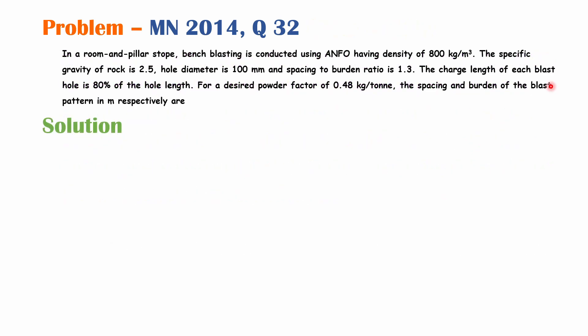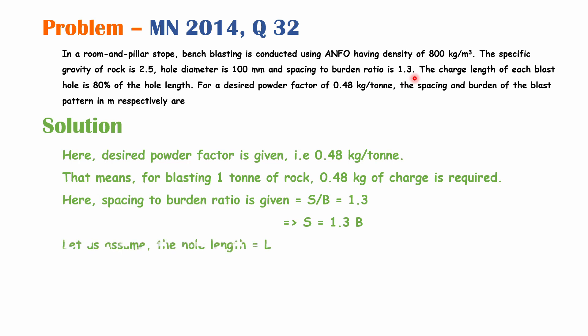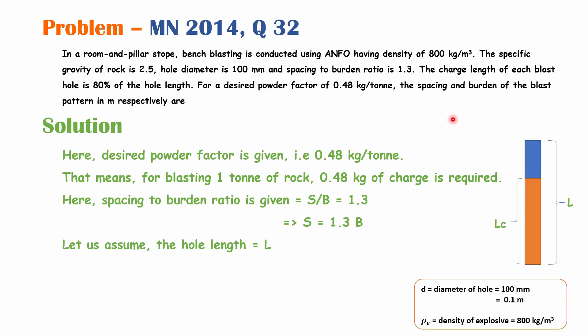The desired power factor is given as 0.48 kg/ton, meaning for blasting one ton of rock, 0.48 kg of charge is required. The spacing-to-burden ratio is given as S/B = 1.3, so spacing is equal to 1.3 times the burden. Let us assume the hole length equals L.